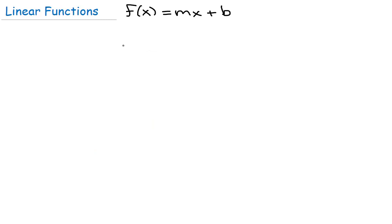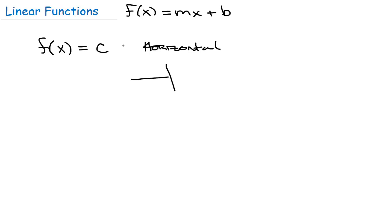A couple of special lines worth mentioning: if your function equals a constant value — say f of x equals c — that gives you a horizontal line. Your y value or output stays at that number no matter what the input is. In this case, you're not rising at all as you travel across the line, so the slope is zero. A horizontal line has a slope of zero.